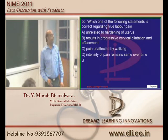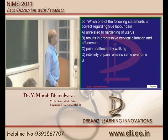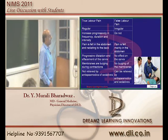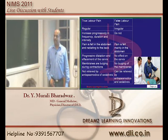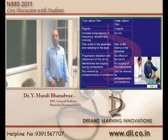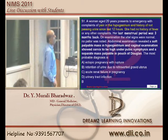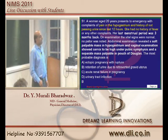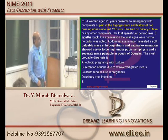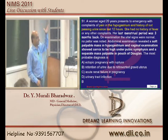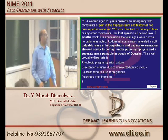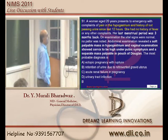How do you differentiate true from false labor? True labor is regular, increases progressively in frequency and duration, pain is felt in the abdomen radiating to the back, progressive dilatation and effacement occur, membranes are bulging during contractions, and it is not relieved by antispasmodics. A woman aged 20 years with pain in hypogastrium, no urine for 12 hours, three months amenorrhea, cervix high under the pubic symphysis, and separate mass palpable in the pouch of Douglas - all clues point to a retroverted gravid uterus leading to urinary retention.